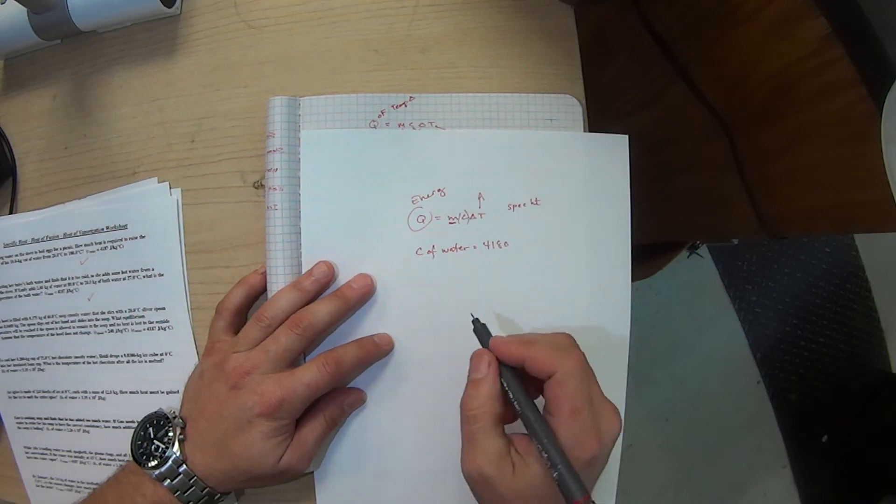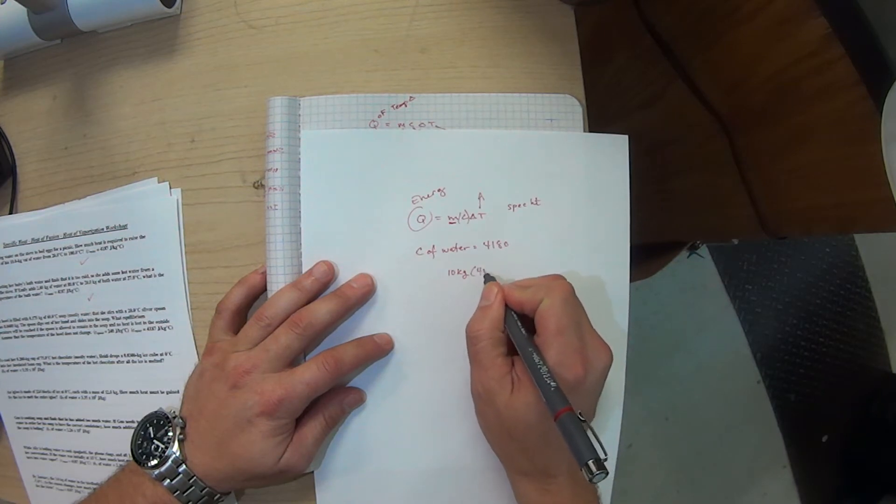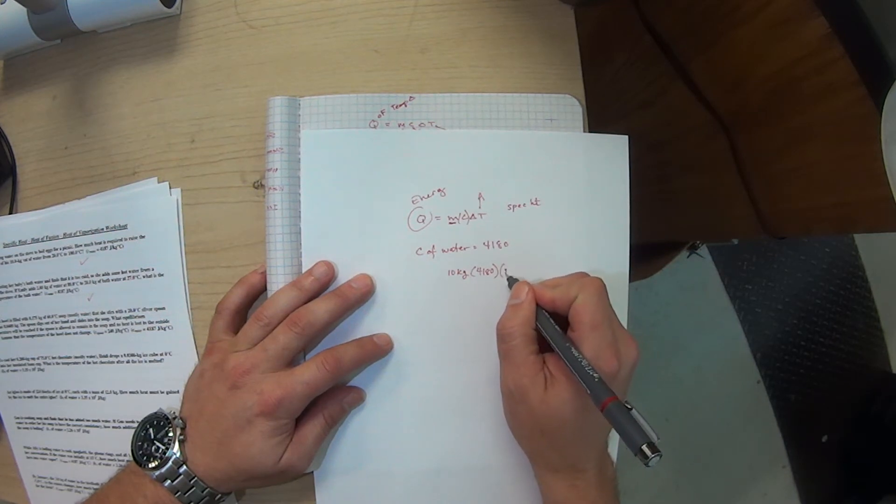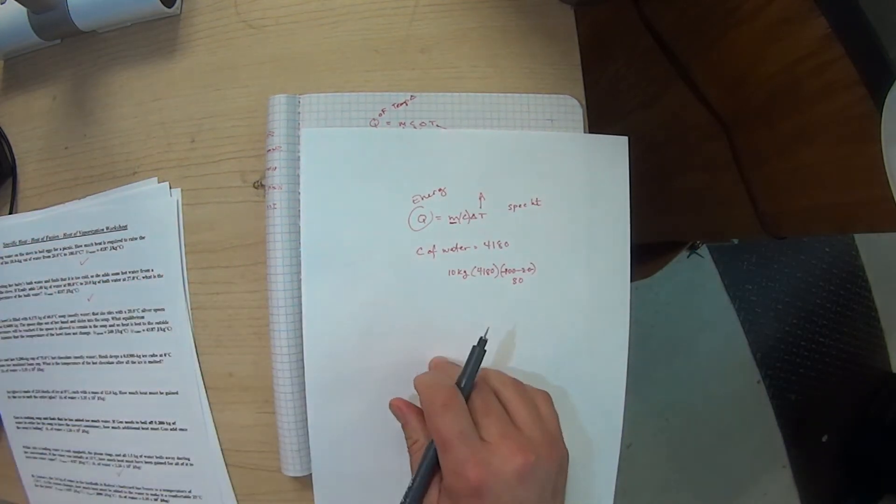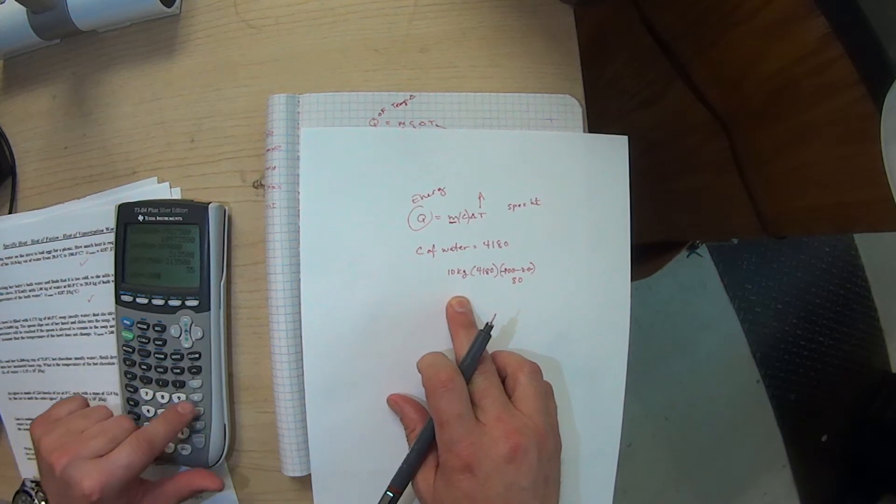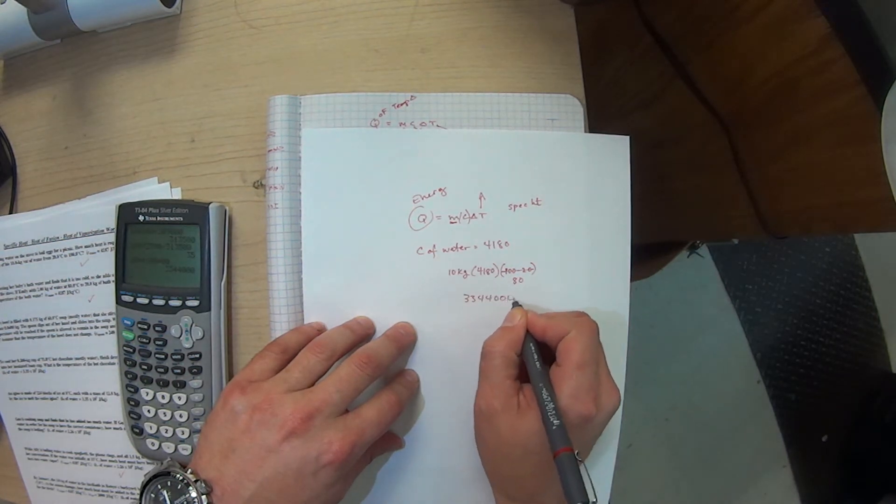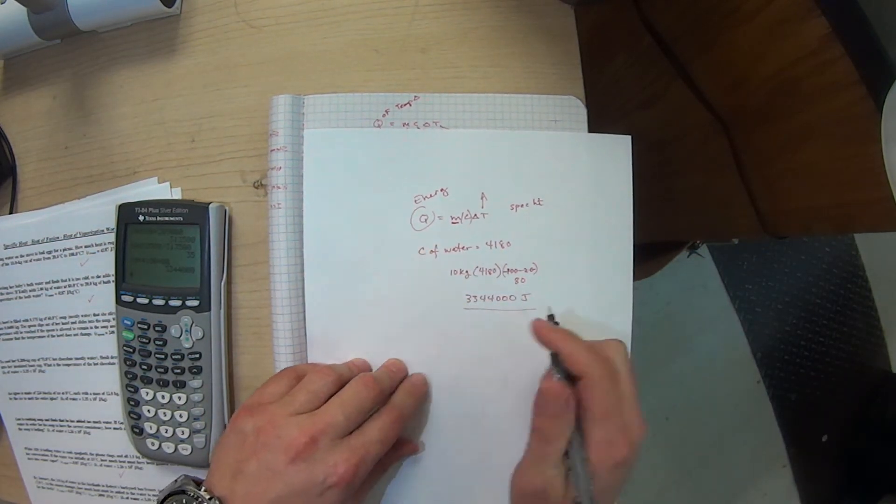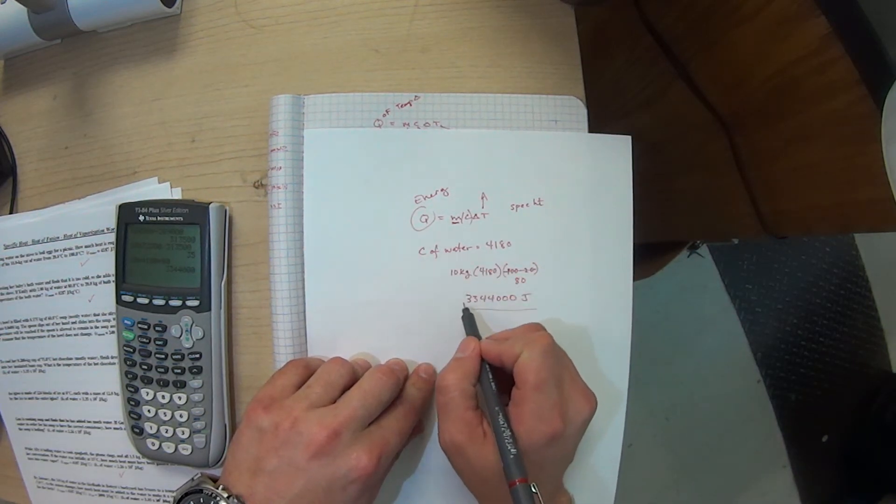In this problem, Peter is changing 10 kilograms of water, which is 4180, and he's changing this temperature here from 100 to 20, which would be 80. Then all we have to do is multiply those numbers together: 10 times 4180 times 80, and that will give us 3,344,000 joules. That's how many joules it would take to change that water.